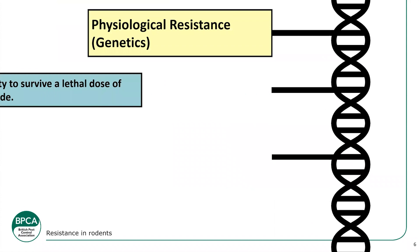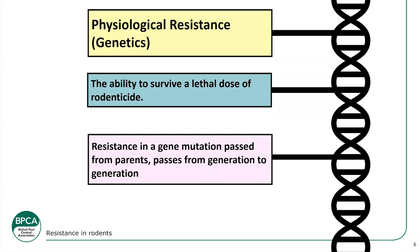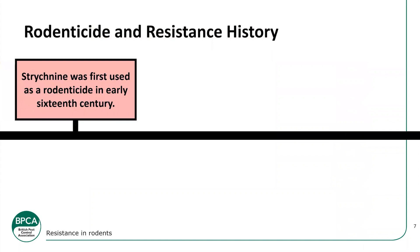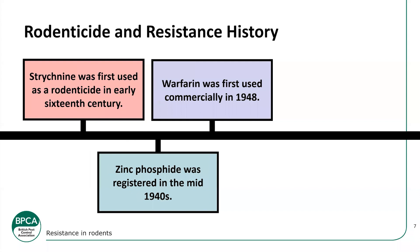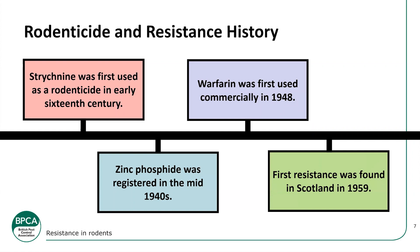Genetic resistance means rodents have an ability to survive what would normally be a lethal dose of anticoagulant. It's a mutation identified in the DNA and passed down from parents to offspring. Looking at the history: strychnine was first used around the 16th century, zinc phosphates were registered around the 1940s, and warfarin came around 1948. Resistance was first found in Scotland in 1959.